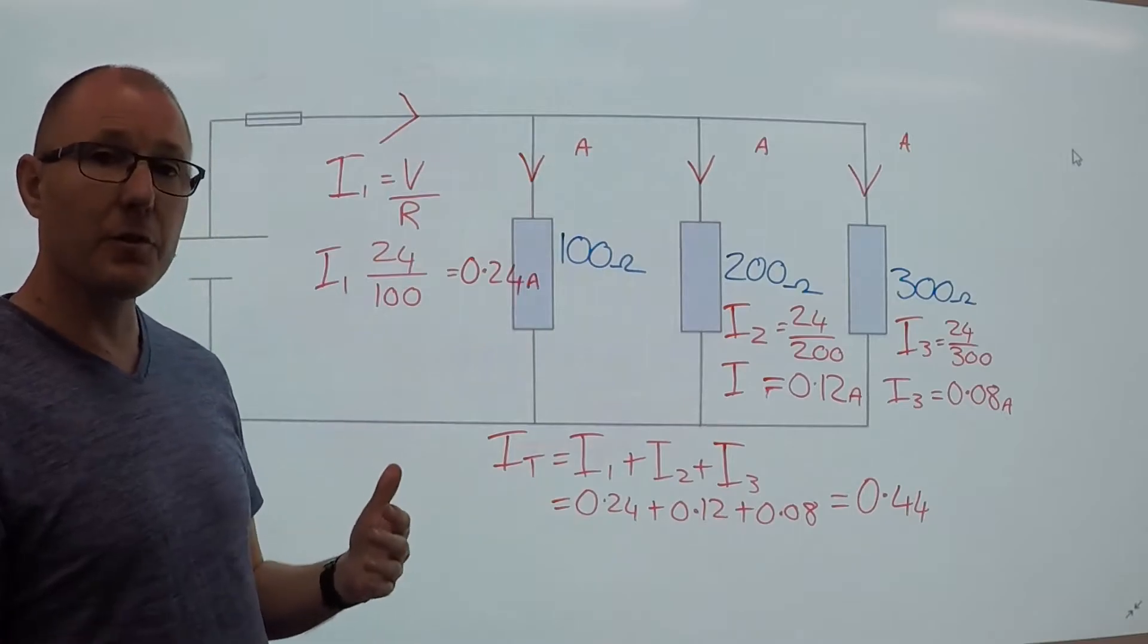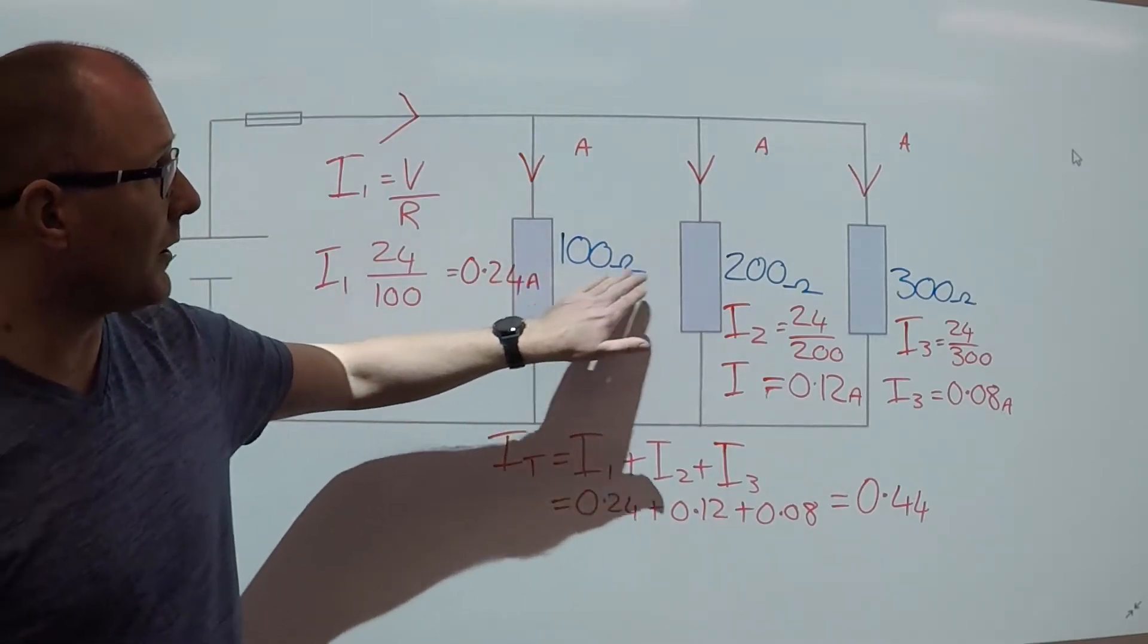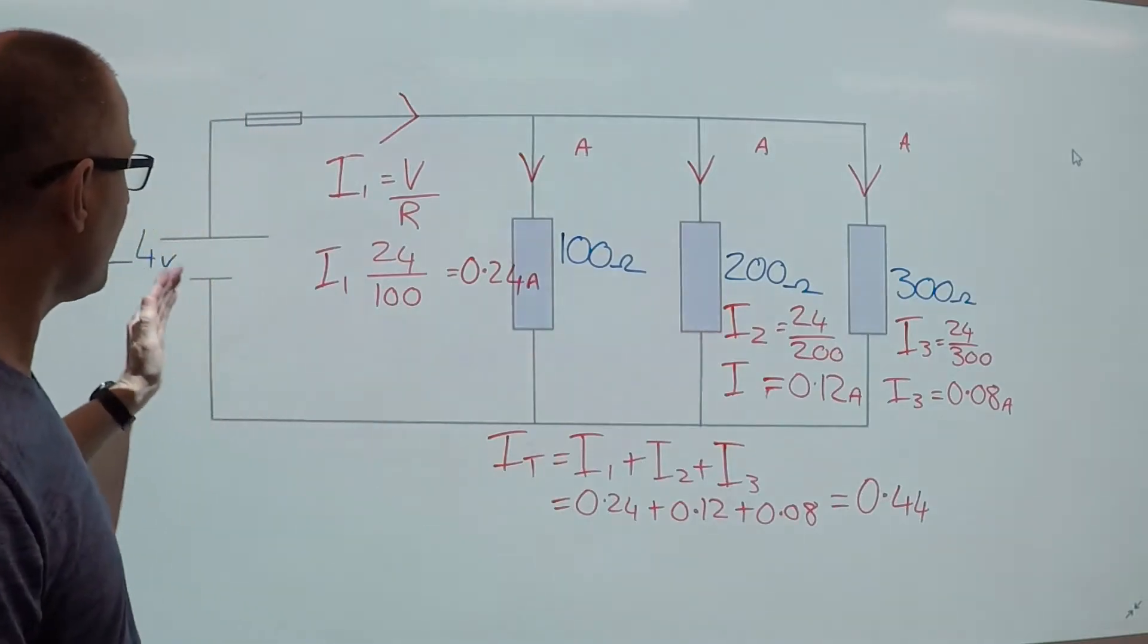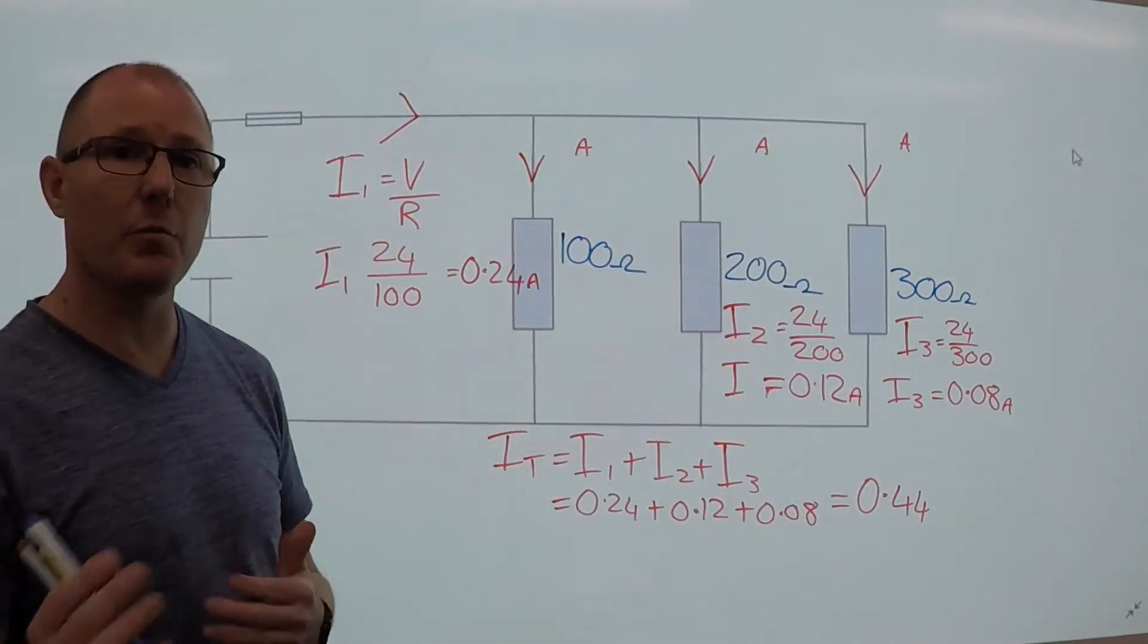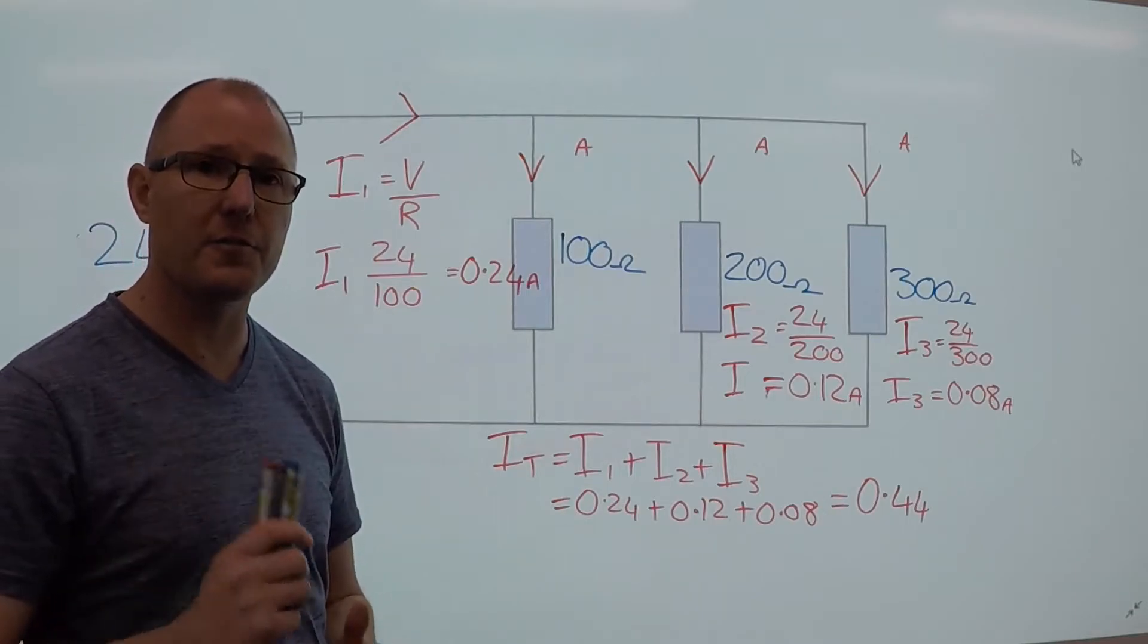So if we have a look at our resistors, we've got 100, 200, 300. We've got a supply voltage of 24 volts, and we have to work out the current within those three areas and the total current.